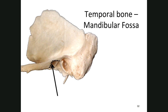Anterior to the external auditory meatus, you'll see a little depression — that's the mandibular fossa. That's where your jaw attaches onto your skull. TMJ — the temporomandibular joint — is actually the name of a joint. We've just associated it with a condition where you get clicking or painful popping in that area.